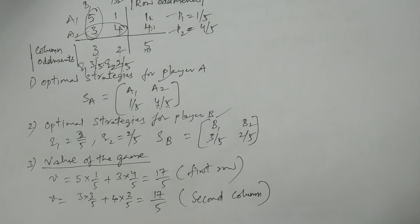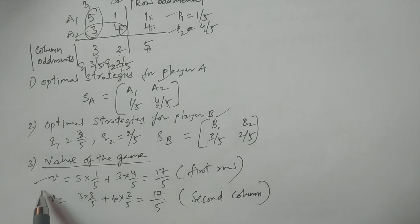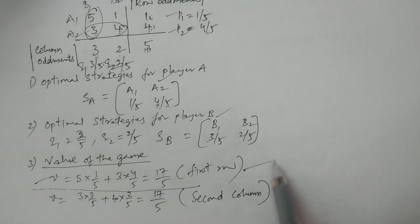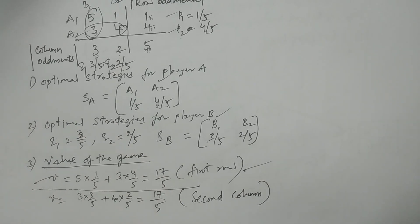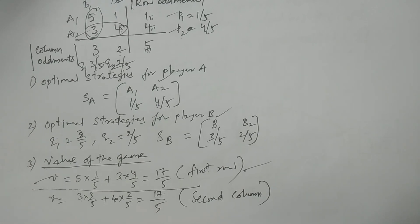The value of the game is 17/5 regardless of which row or column you choose. So this is the matrix augments method. In this method, first confirm the matrix is a square matrix, then calculate row augments and column augments.